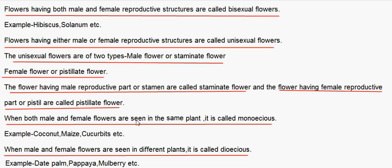When both male and female flowers are seen in the same plant, it is called monoecious. For example, in coconut trees, maize, and cucurbits, both male and female flowers are on the same plant. When male and female flowers are seen in different plants, it is called dioecious. Examples include date palm, papaya, and mulberry.